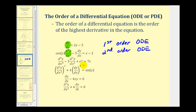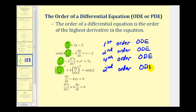In the third equation, the highest derivative is a fourth derivative, and therefore this is a fourth order ODE. We need to be careful on the next equation — the three and five are exponents, and we're only looking for the highest derivative, which is a second derivative, making this a second order ODE. In the fifth example, there is a first partial derivative, making this a first order PDE. The last equation contains a second partial derivative, and therefore this is a second order PDE.